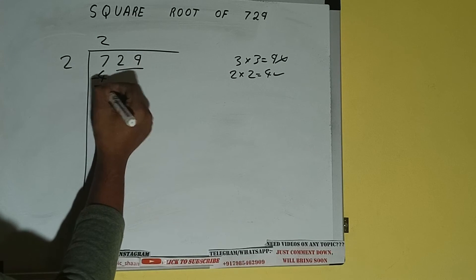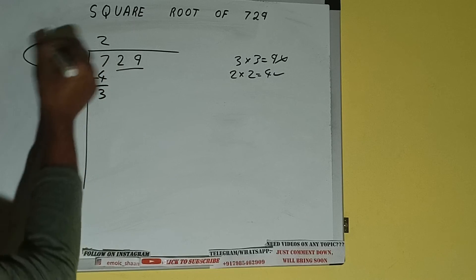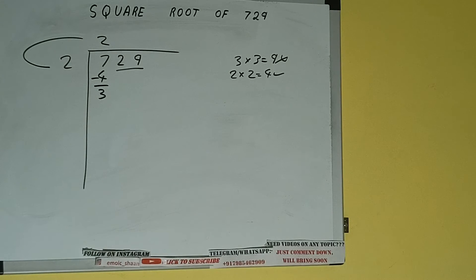4 subtract, 3 will be left. We did 2 into 2, so add both. So 2 plus 2 will be 4. Write it here and keep a digit extra, and this number we need to make it big.